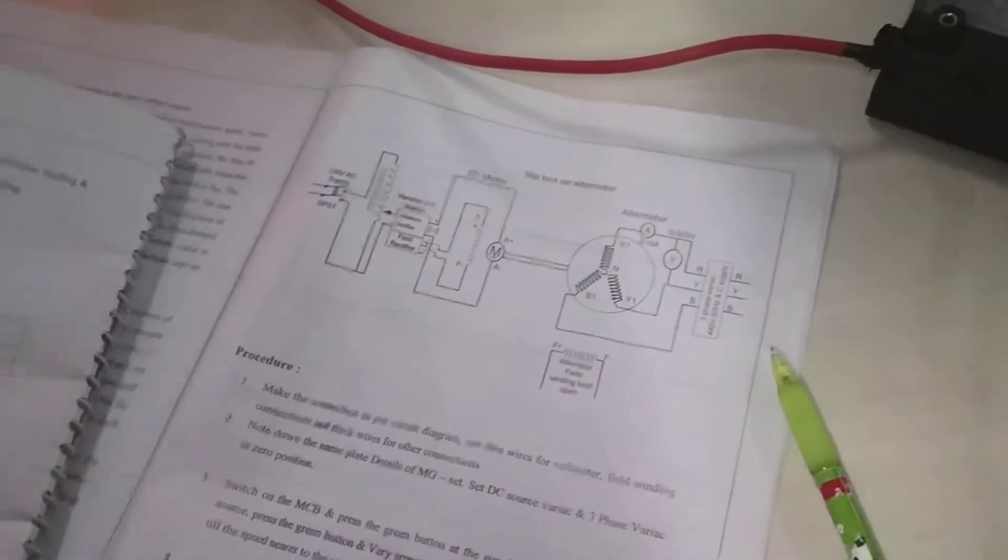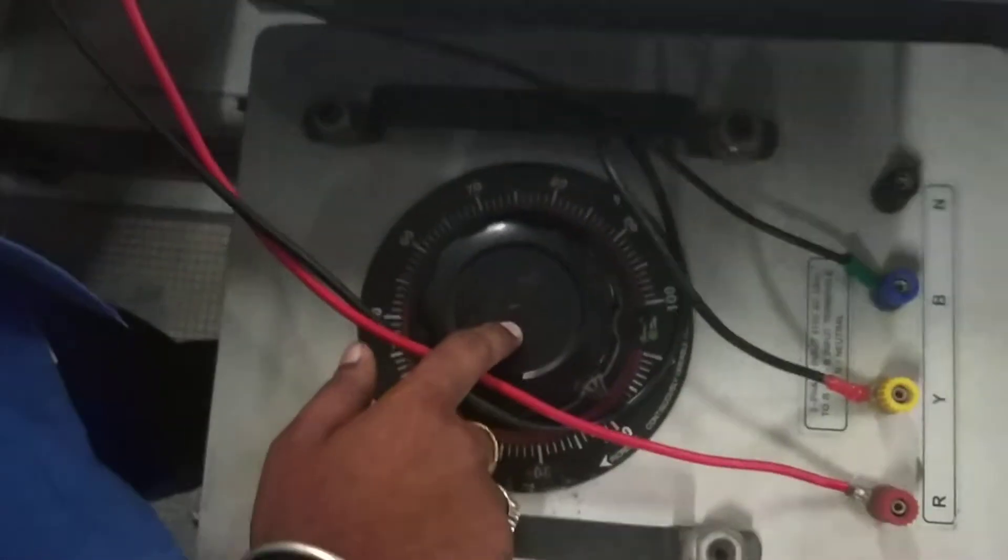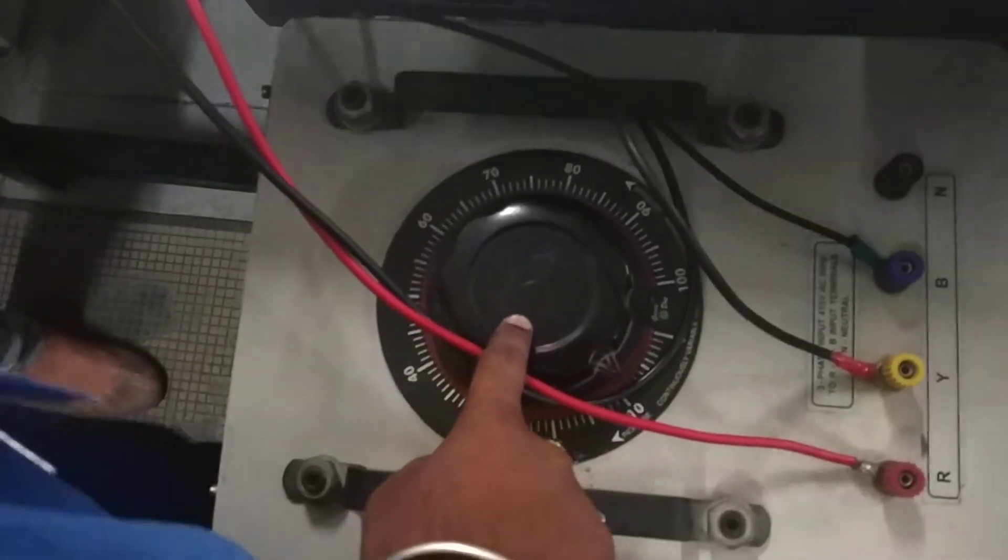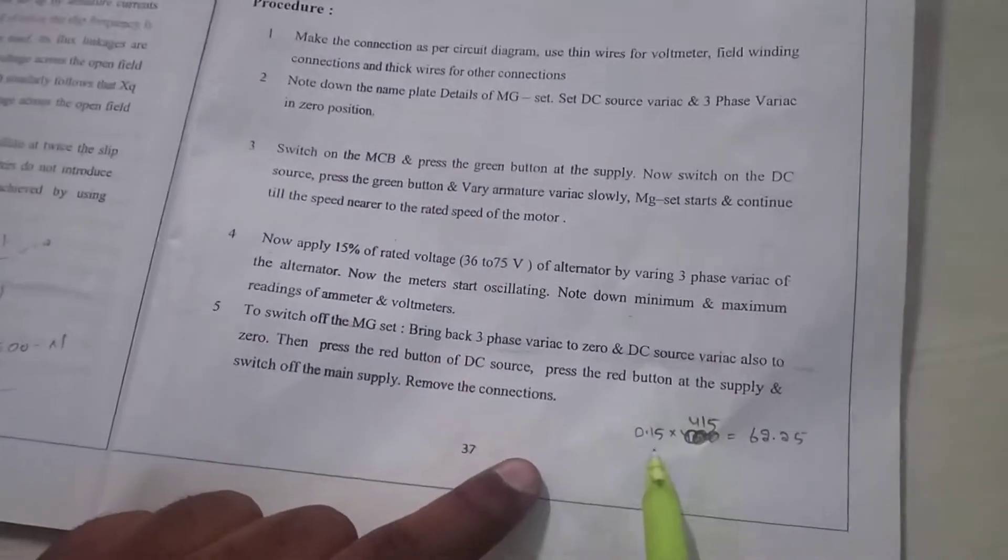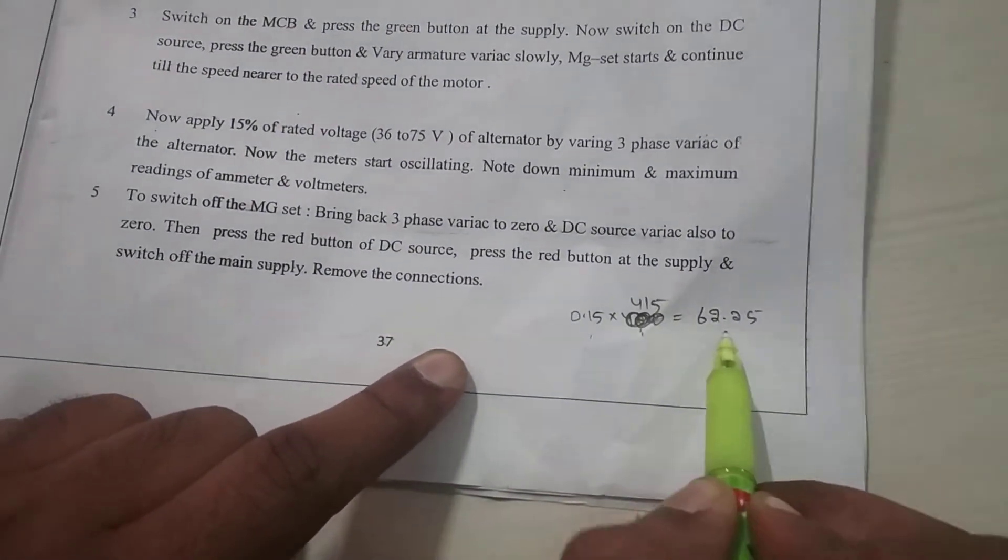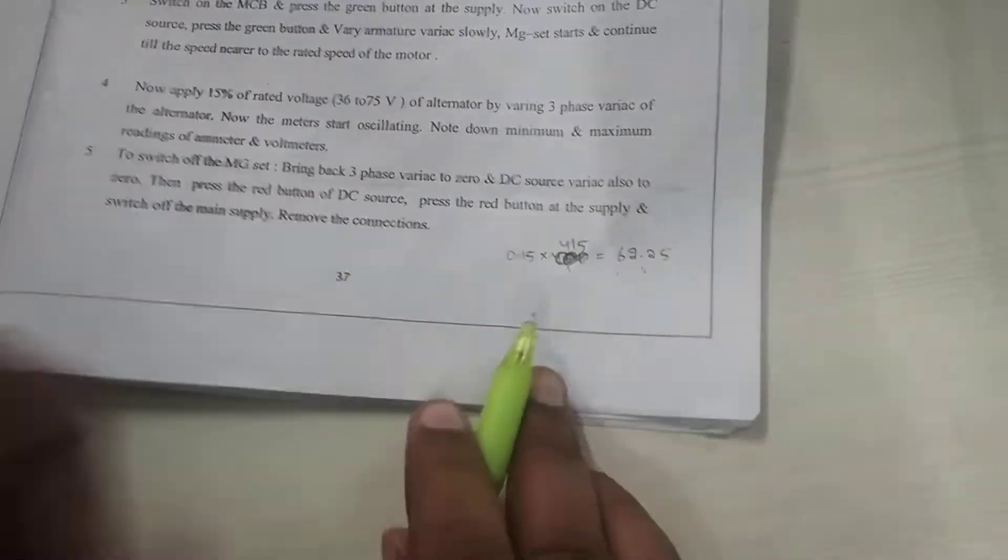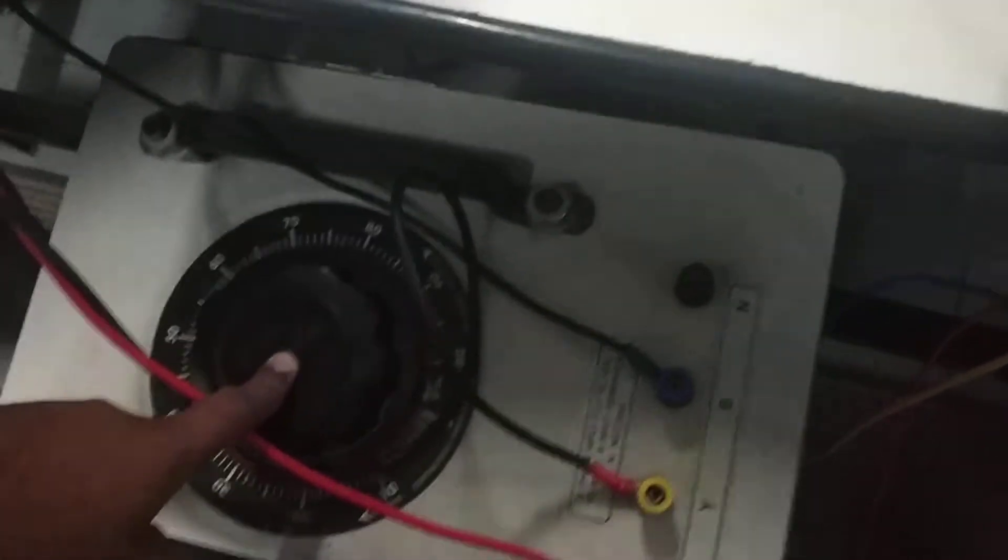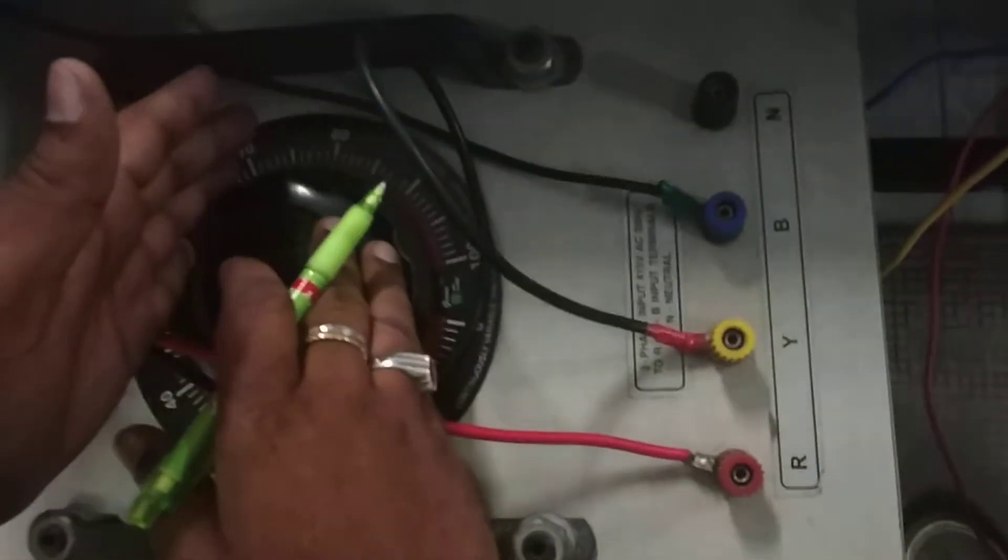We have to apply 15% of the rated voltage. 15% of the rated voltage of the alternator is applied, that is 62.25 volts. We will apply approximately 63 volts for the alternator.